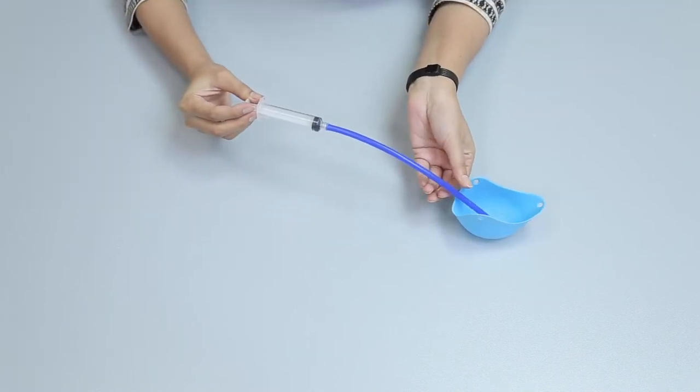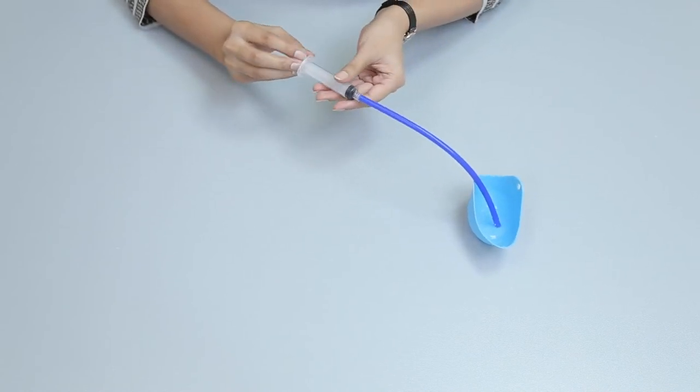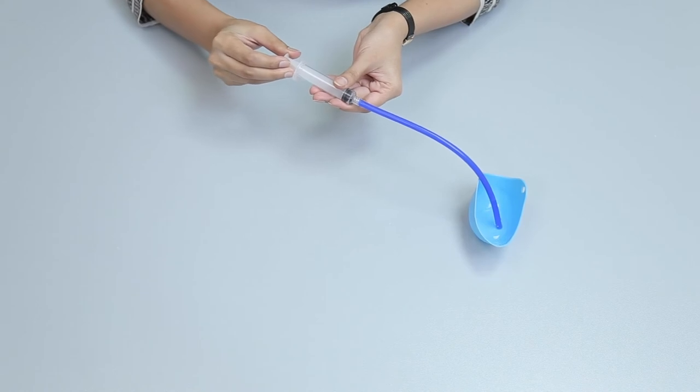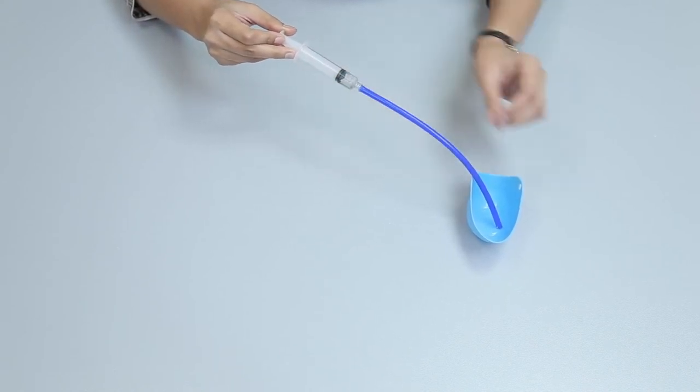Put the silicon tubing in the silicon egg poaching cup filled with water by pulling the plunger of the syringe.